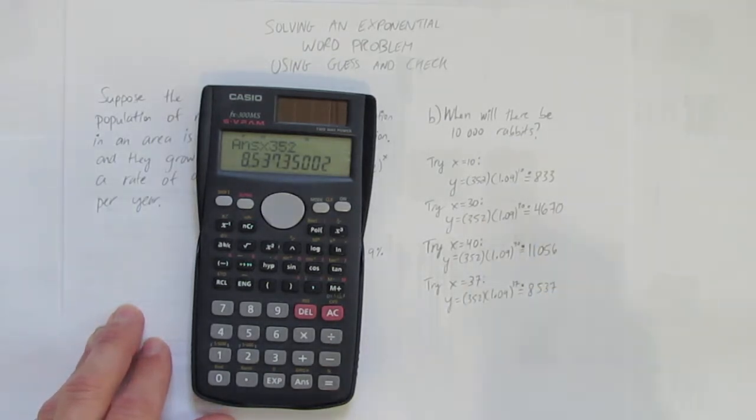8,537 rabbits. Each time I've had to round down. That's interesting. Just coincidentally, all my guesses have been round down. Well, it's between 37 and 40.